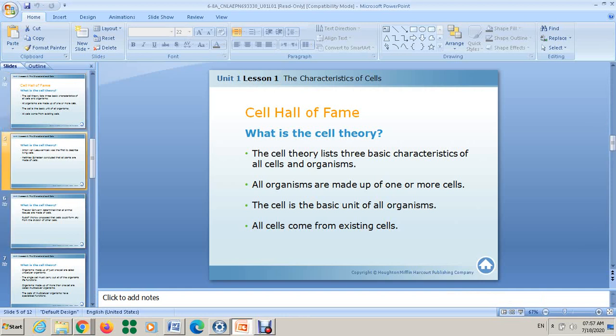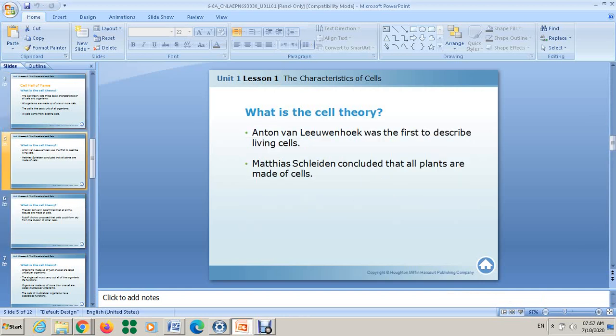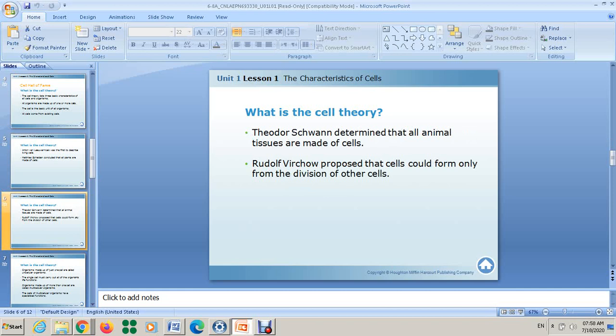Now these are the scientists who worked to put the main points of the cell theory. You have to know their names. Anthony van Leeuwenhoek was the first to describe living cells. Schleiden concluded that all plants are made up of cells. Theodore Schwann determined that all animal tissues are made up of cells. Rudolf Virchow proposed that cells could form only from the division of other cells.